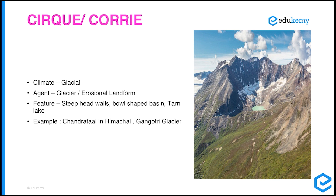Starting with cirque, also known as corrie. Cirques are usually found in areas with a glacial climate where the agent of erosion is a glacier. This comes within the category of erosional landforms. A cirque is basically a hollow-shaped depression formed by glaciers.